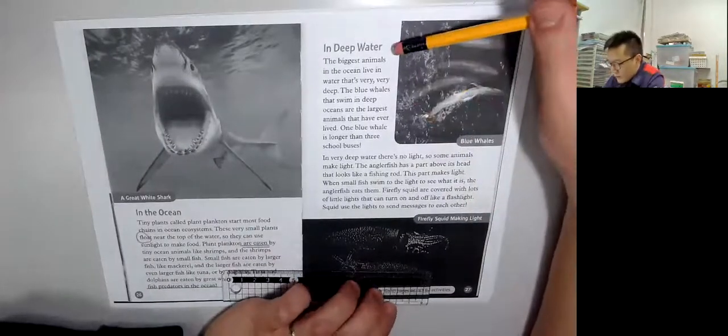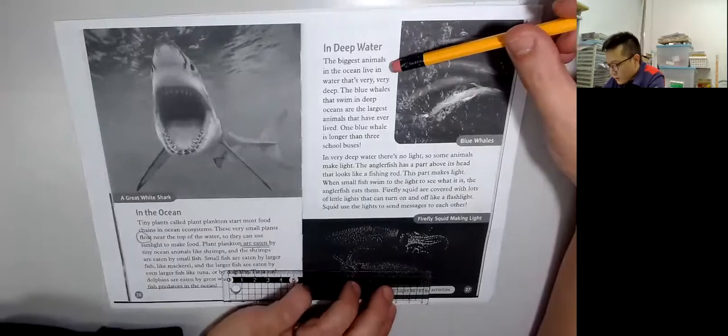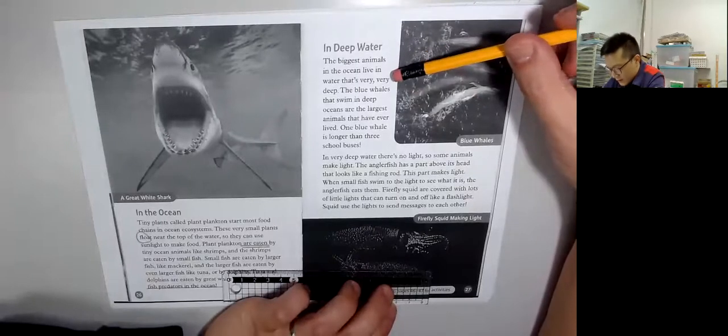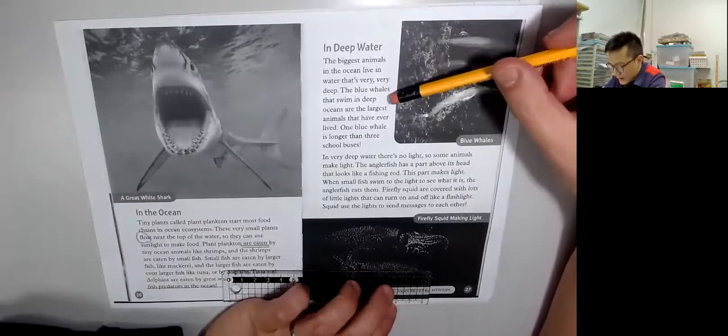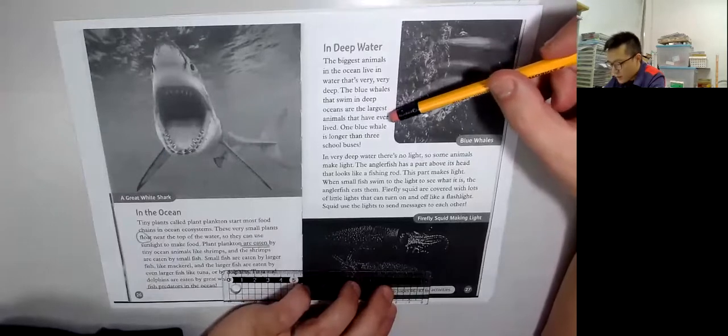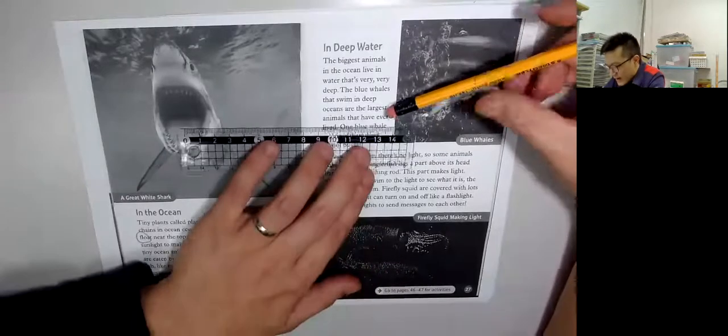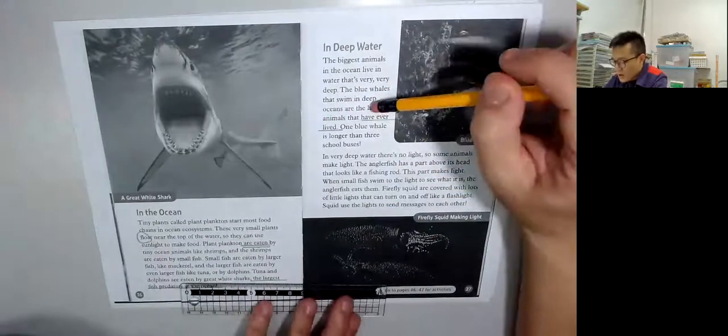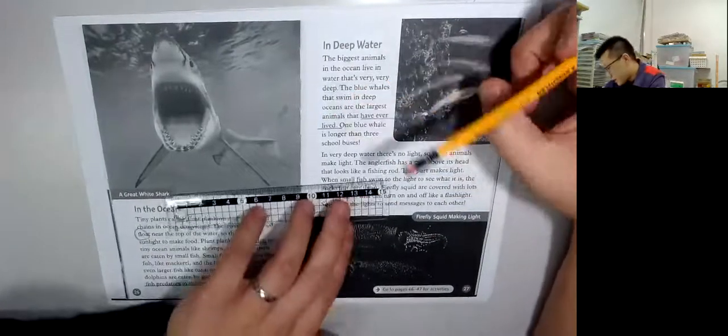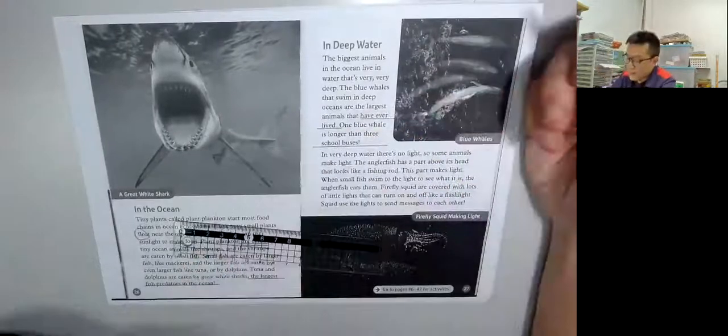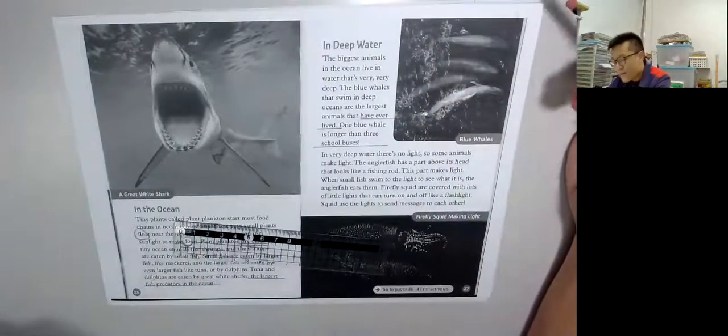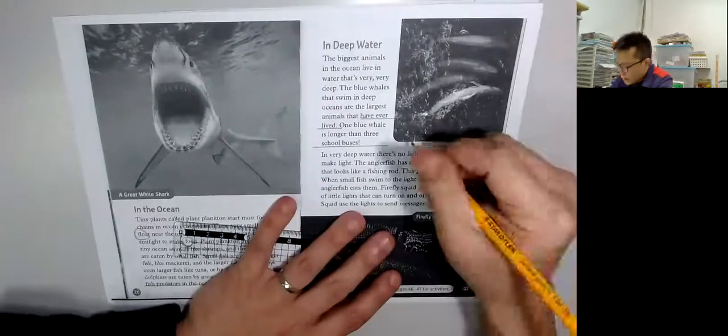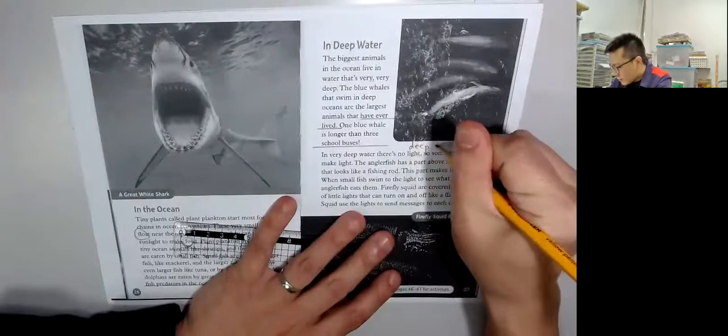In deep water, the biggest animals in the ocean live in water that is very deep. And the blue whales that swim in deep oceans are the largest animals that have ever lived. One ocean whale is longer than three school buses.